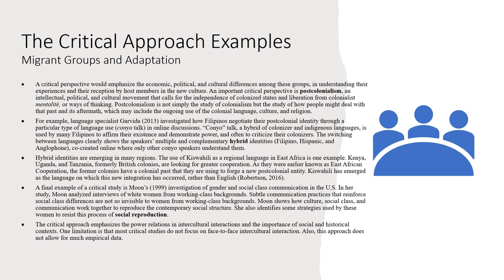A final example of a critical study is Moon's investigation of gender and social class communication in the U.S. Moon analyzed interviews of white women from working class backgrounds and showed how subtle communication practices that reinforce social class differences are not so invisible to women from working class backgrounds. She shows how culture, social class, and communication work together to reproduce the contemporary social structure, and identifies strategies used by these women to resist this process of social reproduction — how critical approaches are interested in that ability to resist entrenched power structures.